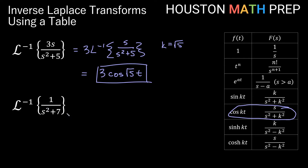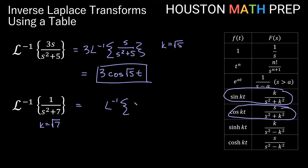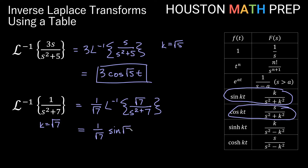For the inverse transform of 1 over s squared plus 7, we use the sine kt formula which requires k over s squared plus k squared. We can see k equals square root of 7, but we don't have square root of 7 on top. To create it, we multiply the numerator by square root of 7 and divide by square root of 7 out front. This gives us 1 over square root of 7 times sine of square root 7 times t.